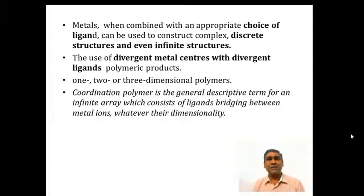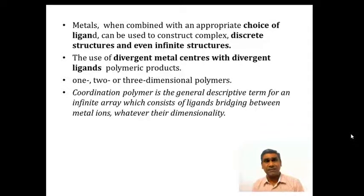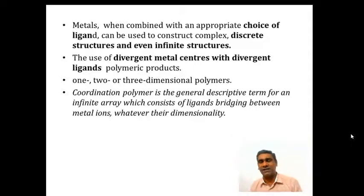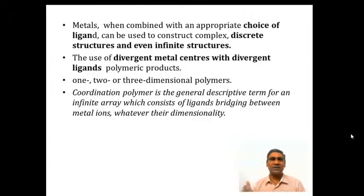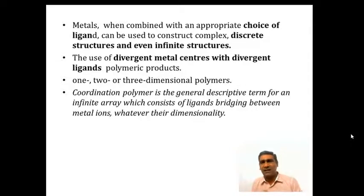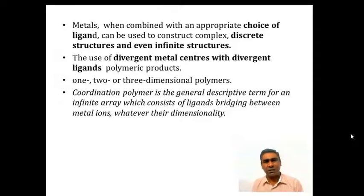When metals combine with an appropriate choice of ligands, they can be used to construct complexes, discrete structures and even infinite structures — that is the one-dimensional, two-dimensional and three-dimensional structures. The use of divergent metal centers with a divergent ligand gives polymeric products.